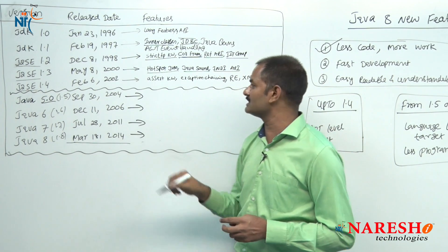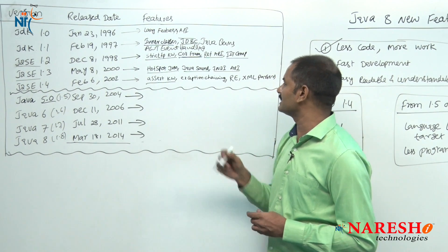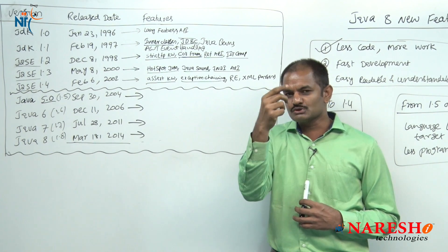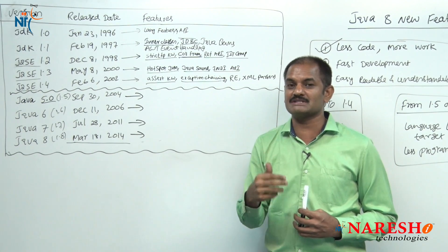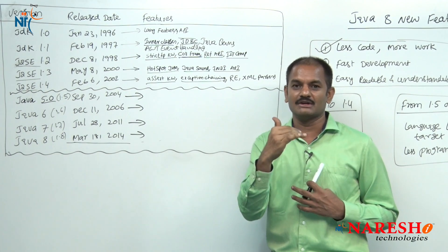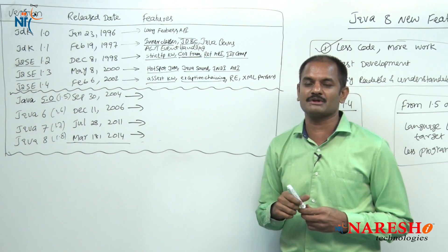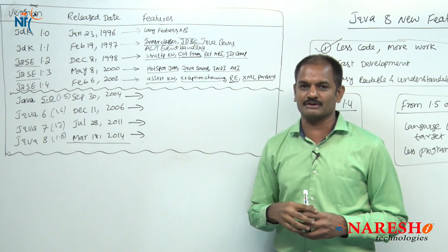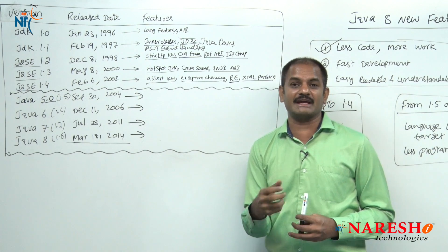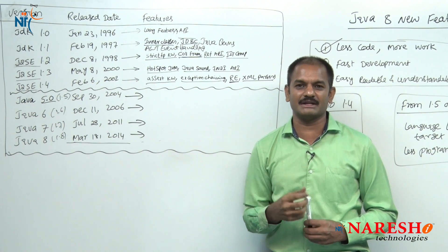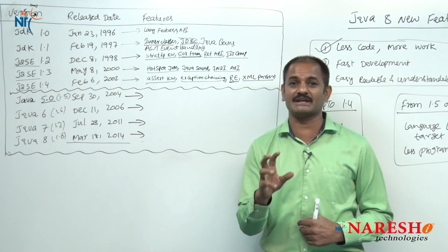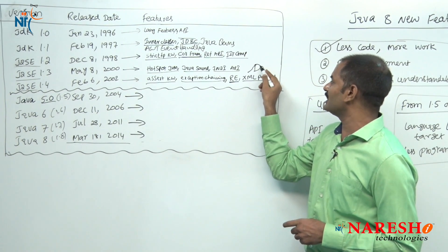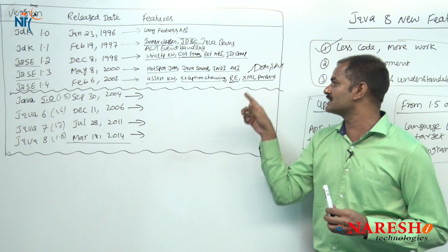In Java 1.4, important changes came: the assert keyword was introduced for exception handling. Also exception chaining — there was a compiler limitation in overriding methods: if the super class overriding method throws a checked exception, in the subclass you cannot throw your own exceptions. To solve this compiler limitation, they introduced exception chaining. Regular expressions — very important — and XML parsers were also introduced. Before Java 1.4, we could not read content from XML files or generate XML files. For that you require parsers: DOM parser and SAX parser — their introduction was given from 1.4.